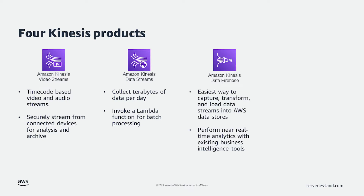The third Kinesis service is Kinesis Data Firehose. Kinesis Data Firehose is the easiest way to capture, transform, and load data streams into AWS data stores for near real-time analytics with existing business intelligence tools. Whereas Kinesis Data Streams is more for capturing and processing large amounts of streaming data, Kinesis Data Firehose helps route the data to the right locations. However, there is some overlap between the two.